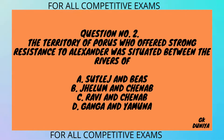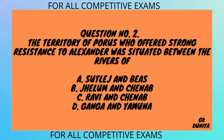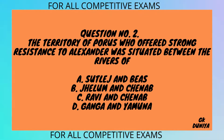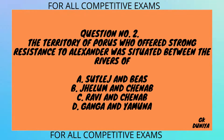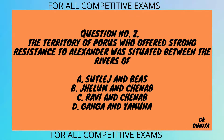Question No. 2. The territory of Porus, who offered strong resistance to Alexander, was situated between the rivers of: A. Satluj and Byas, B. Jhelam and Chenab, C. Ravi and Chenab, D. Ganga and Yamuna.